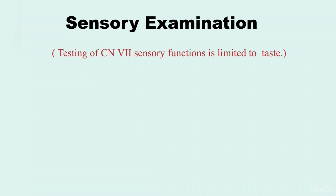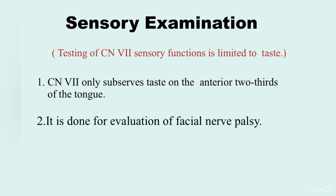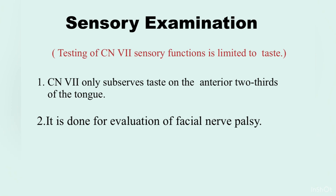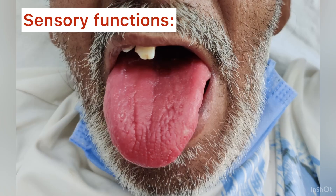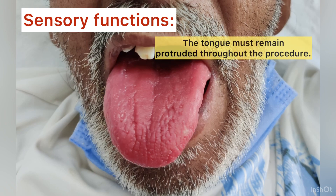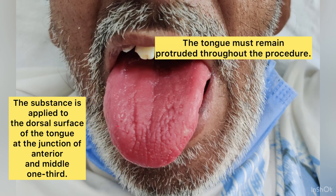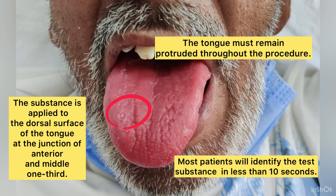The facial nerve carries taste sensation from the anterior two-thirds of the tongue. Impaired taste sensation helps to localize the lesion proximal to the junction of the chorda tympani, because a lesion at or distal to the stylomastoid foramen does not affect taste sensation. The substance to be tested is applied to the dorsal surface of the tongue at the junction of the anterior and middle one-third.